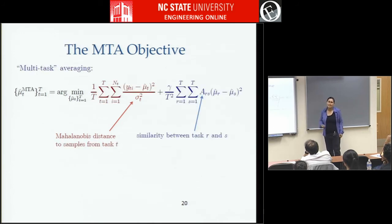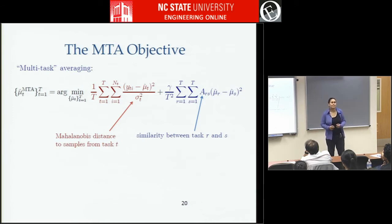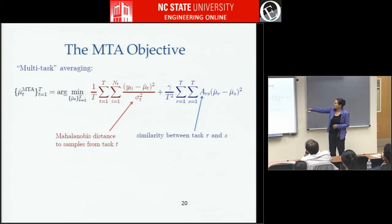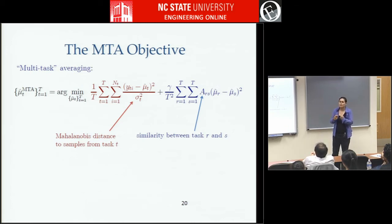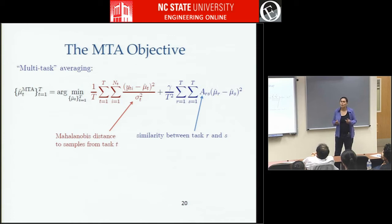Things get interesting when we add the regularizer — that's where we start to have a real multitask problem. We add a regularizer that says: look over all T tasks and all other T tasks, and try to force the mean estimates to be close to each other in mean squared error. We have this matrix A_{rs} that you can use to specify how similar you think any two random variables should be a priori. Question from audience: can you assume the variance is known? Like James-Stein, for the moment we assume the variance is known; in practice we'll have to estimate it.